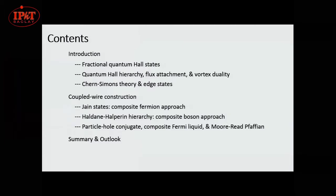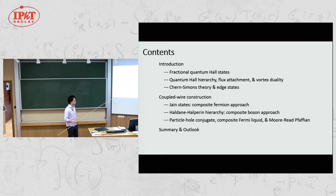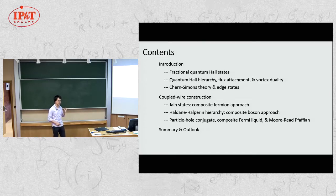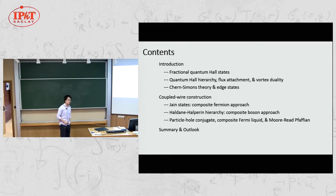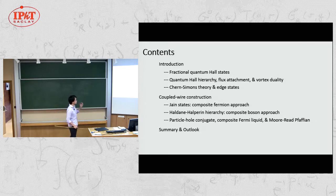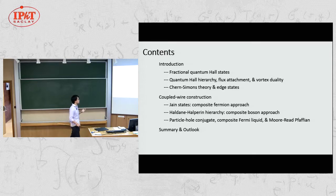This is the outline of my talk. First, I start with what is the fractional Landau state. Then we will go to what is the quantum Hall hierarchy, constructed about the celebrated Laughlin state. To understand that hierarchy, we also need the concept of flux attachment and vortex duality. Then I briefly cover the Chern-Simons theory to describe the fractional Hall state, and then the main subject: understanding that physics in terms of the coupled wire approach — the Jain state, the Haldane-Halperin hierarchy state, particle conjugation, composite fermion, and the Moore-Read Pfaffian state.